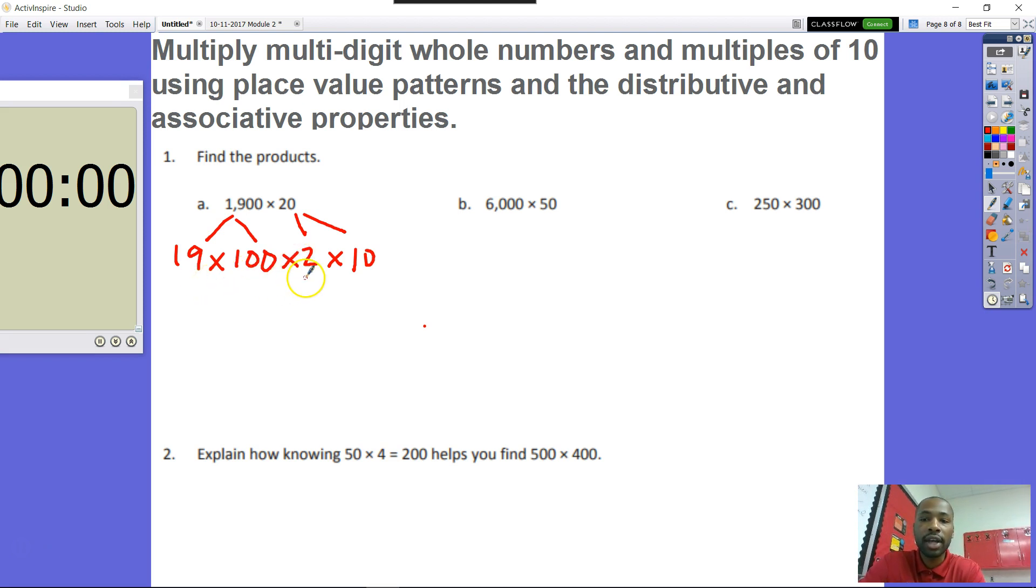Now remember, we have a multiplication sign in here between these two as well. So with all of these factors, now we turned our two factors into four factors. Now we want to get our quote-unquote bad numbers. Not bad meaning bad, but bad meaning good. Our factors that are normal numbers, our 19 and our 2, we're going to get over here by themselves, and then we're going to get our 10 times 100 over here.